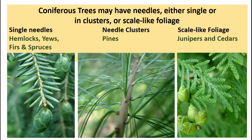Some of the characteristics used in keys are based on foliage. For coniferous trees, we look at how needles are arranged. Some species like hemlocks, yews, firs, and spruces have single needles. Pines have needles in clusters called fascicles — eastern white pine has five needles per fascicle. Some conifers like junipers and cedars have scale-like foliage, which can be soft as in northern white cedar or prickly as in eastern red cedar.